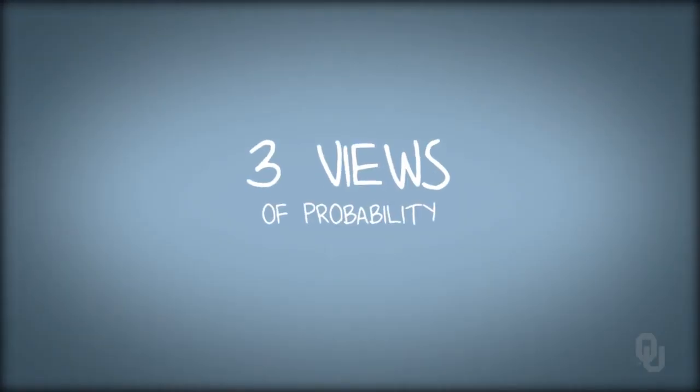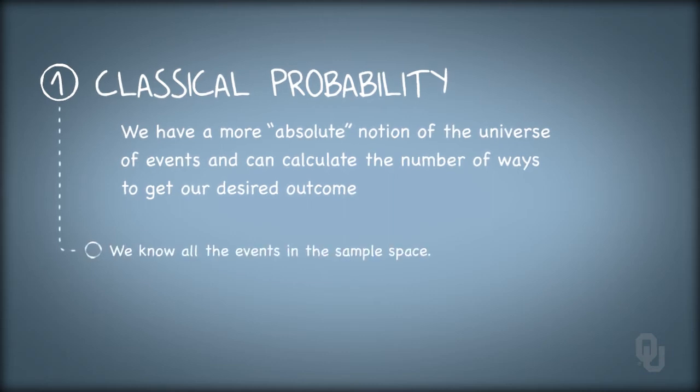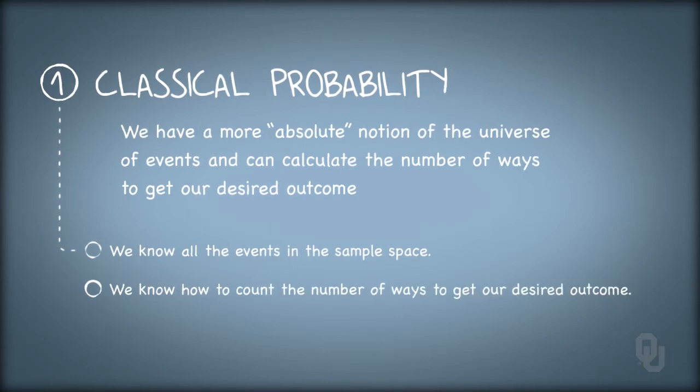There are three views of probability. The first is classical probability, where we have a more absolute notion of the universe of events and we can calculate the number of ways to get our desired outcome. Here we know all the events in the sample space and we know how to count the number of ways that our event of interest can occur.